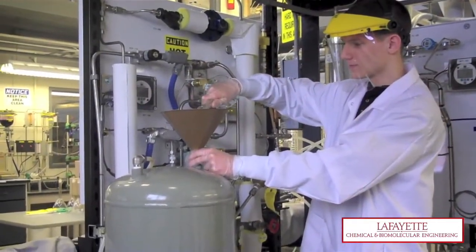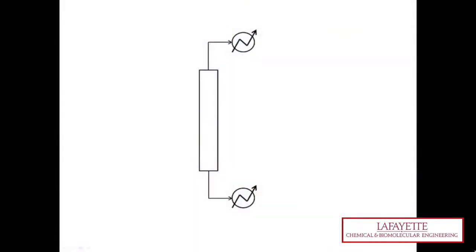Distillation is the process by which mixtures are physically separated based on their differences in relative volatility. It involves three major components: the column, a reboiler, and a condenser.